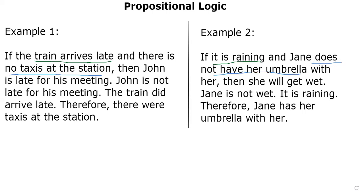Then John is late for his meeting on the left hand side here. Then she will get wet. John is not late for his meeting on the left hand side. Right hand side, Jane is not wet. Train did arrive late. It is raining. There is a therefore here and there is also therefore here. That's a conclusion. There were taxis at the station. That's a conclusion. Jane has her umbrella with her.